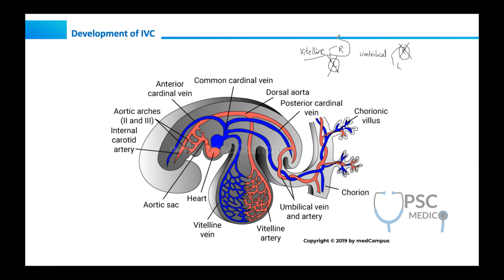What is the fate of the right vitelline vein? Here is the key point. If you understand this, understanding the developmental aspects of IVC becomes easy. The left vitelline vein disappears, but the right vitelline vein enlarges. This enlarged right vitelline vein forms the right hepatocardiac channel. So the right vitelline vein enlarges and forms the right hepatocardiac channel.